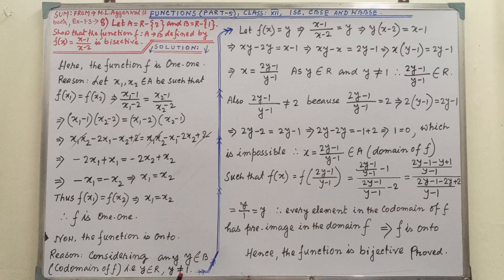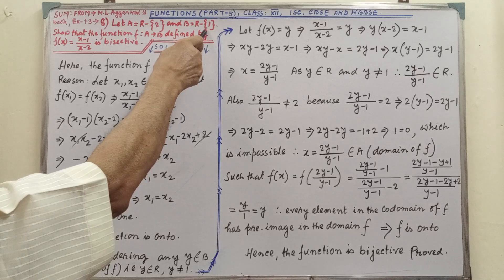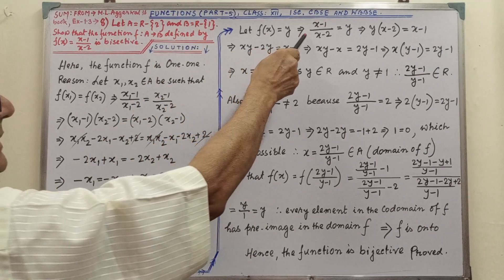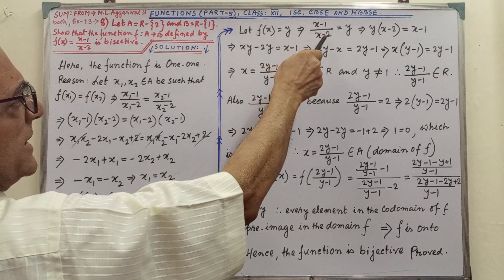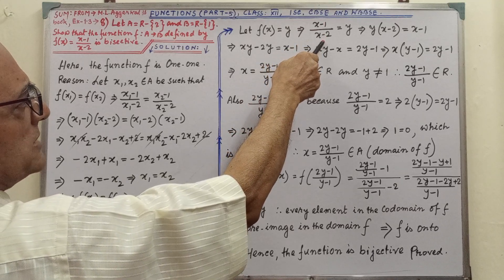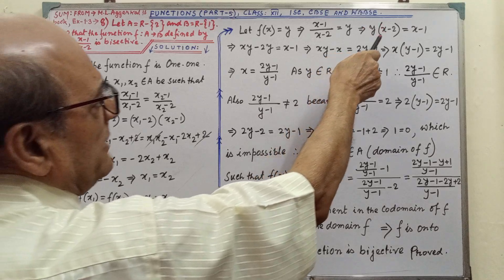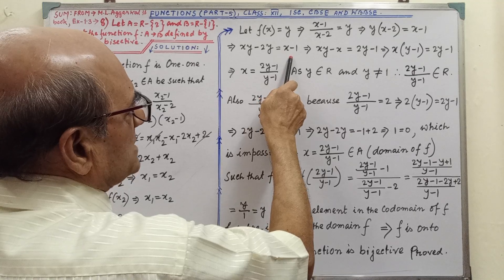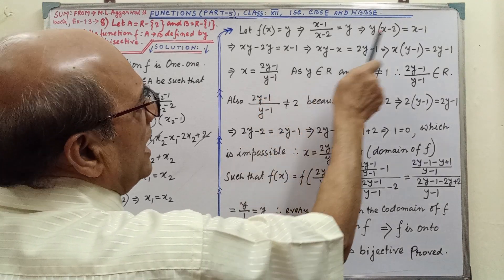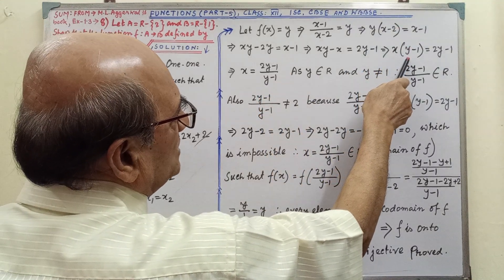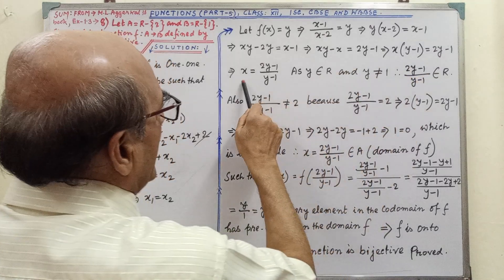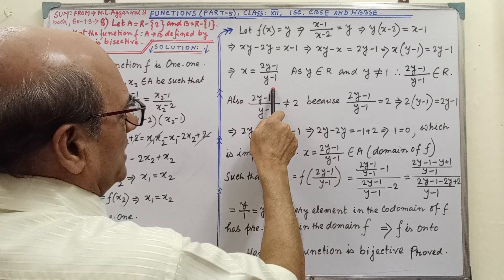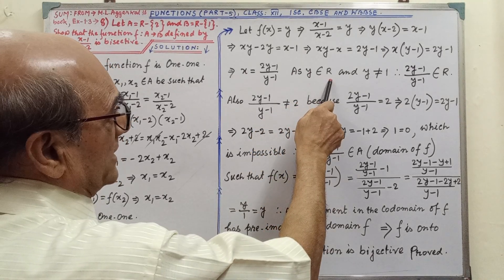Y not equal to 1, that is given. Let F(X) equal to Y implies X minus 1 divided by X minus 2 equal to Y. Then by cross multiplication we are getting this. Then simple multiplication and interposition and by taking common we are getting this.